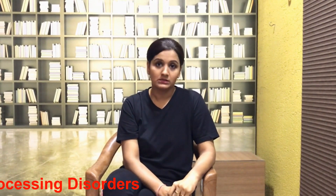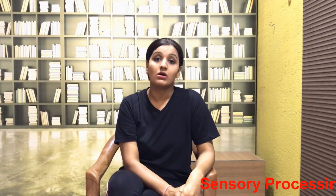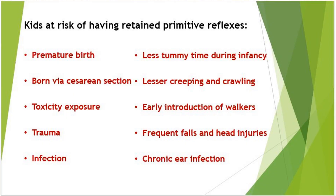If these primitive reflexes are not integrated well on time, it will cause issues with the functioning of one or more sensory systems, which in turn will lead to sensory processing disorders. The kids who are at risk of having retained primitive reflexes are those who are born prematurely, born via C-section, exposed to any trauma, toxicity, or anesthetics, or who experienced a lack of tummy time during early infancy, less exposure to creeping and crawling, early introduction to walkers, or suffered from frequent falls or injuries.